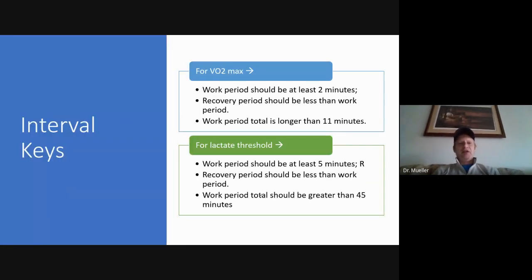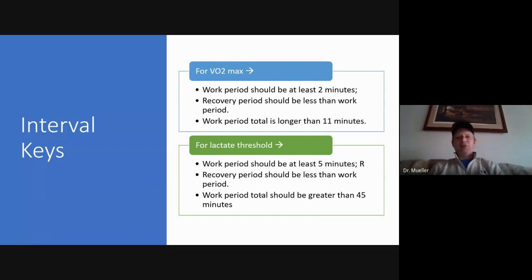The keys for interval training: if you're trying to improve VO2 max, then you want to go at VO2 max pace or slightly faster. The work period should be at least two minutes, and then the recovery period should be less than the work period. So you could do, for example, you could do four minutes at VO2 max pace, then take three minutes to recover, then do four minutes at VO2 max pace, then three minutes to recover and so on until you're done with the workout.